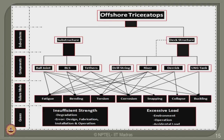Once we understand the concepts and components of offshore triceratops, let us get back to the risk analysis as a design conceptualization. Offshore triceratops has two major components: the substructure and the deck structure. The substructure consists of the ball joint, BLS or buoyant leg structures, and the tethers. The deck structure consists of the dual string, risers, derrick and an LNG tank for processing or storage. Now let us quickly see what different failure modes can be identified in a design FMEA of an offshore triceratops.